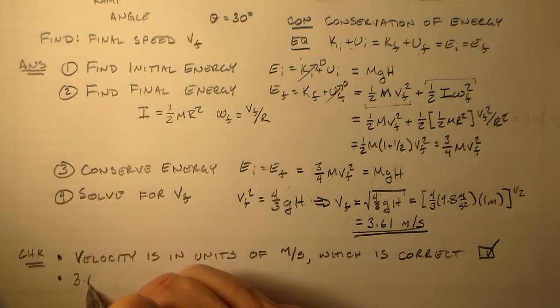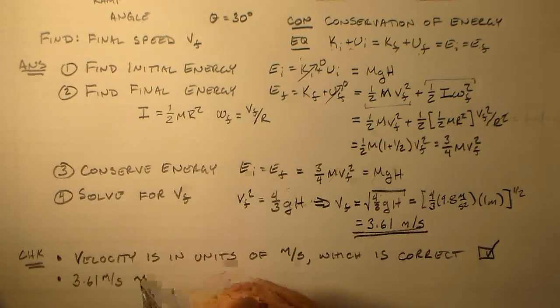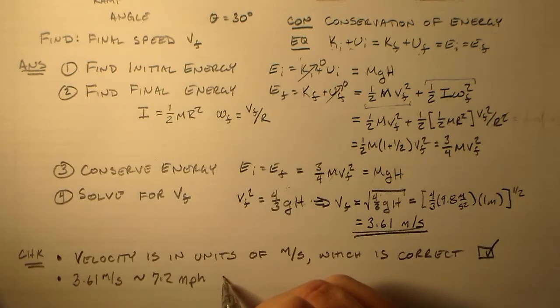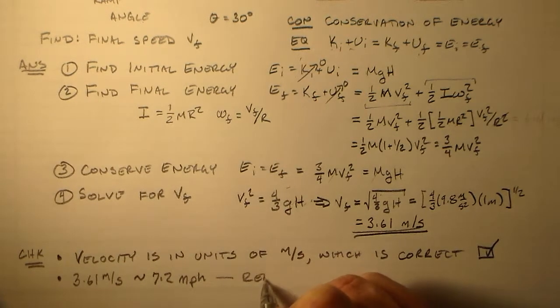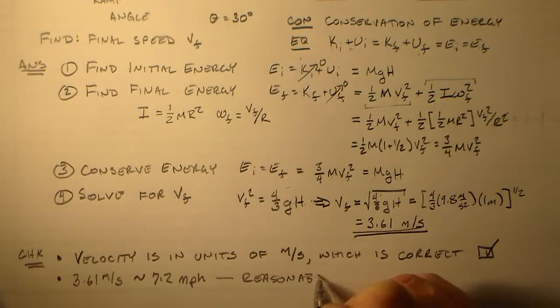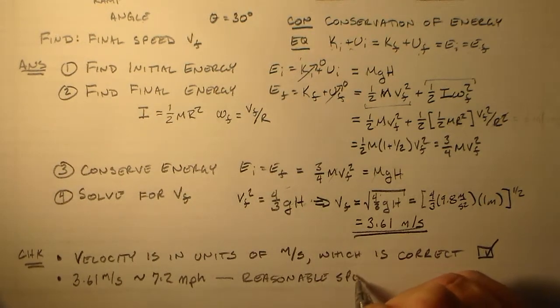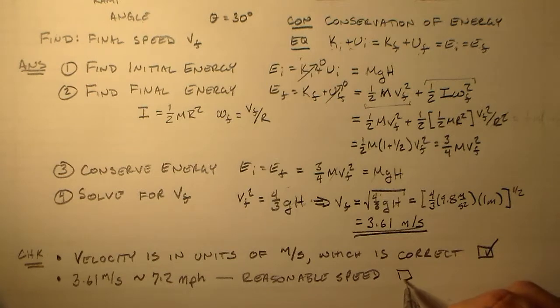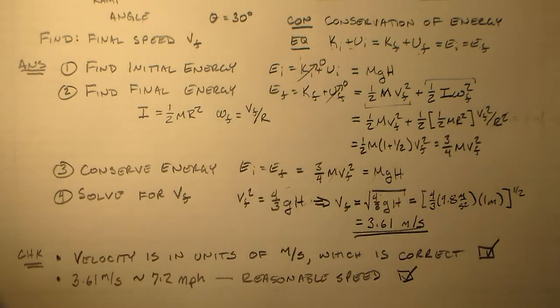And two, 3.61 meters per second is approximately 7.2 miles per hour, which is a reasonable speed, not too fast, not too slow. So it's something that we could envision something that rolls down a small incline to actually have. 7 miles per hour, it would be hard to chase, but not so fast that it's breaking the sound barrier or anything. So, all together, those two things make it a pretty good looking problem, a pretty good looking solution, pretty good looking answer.